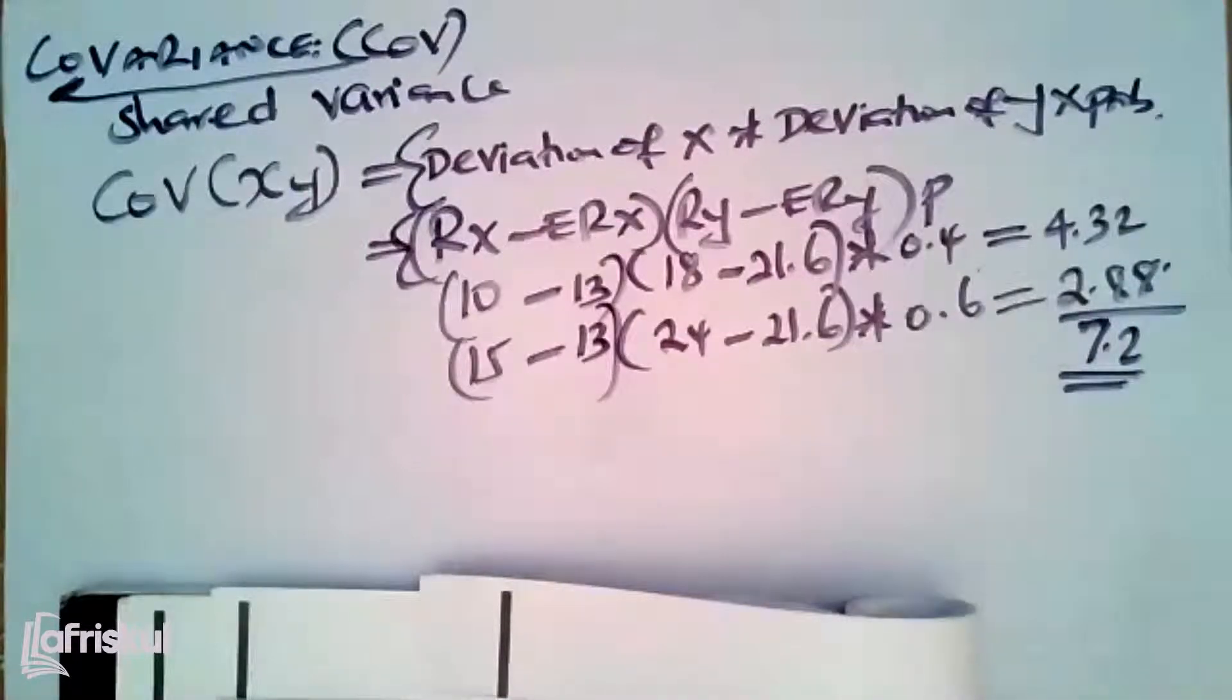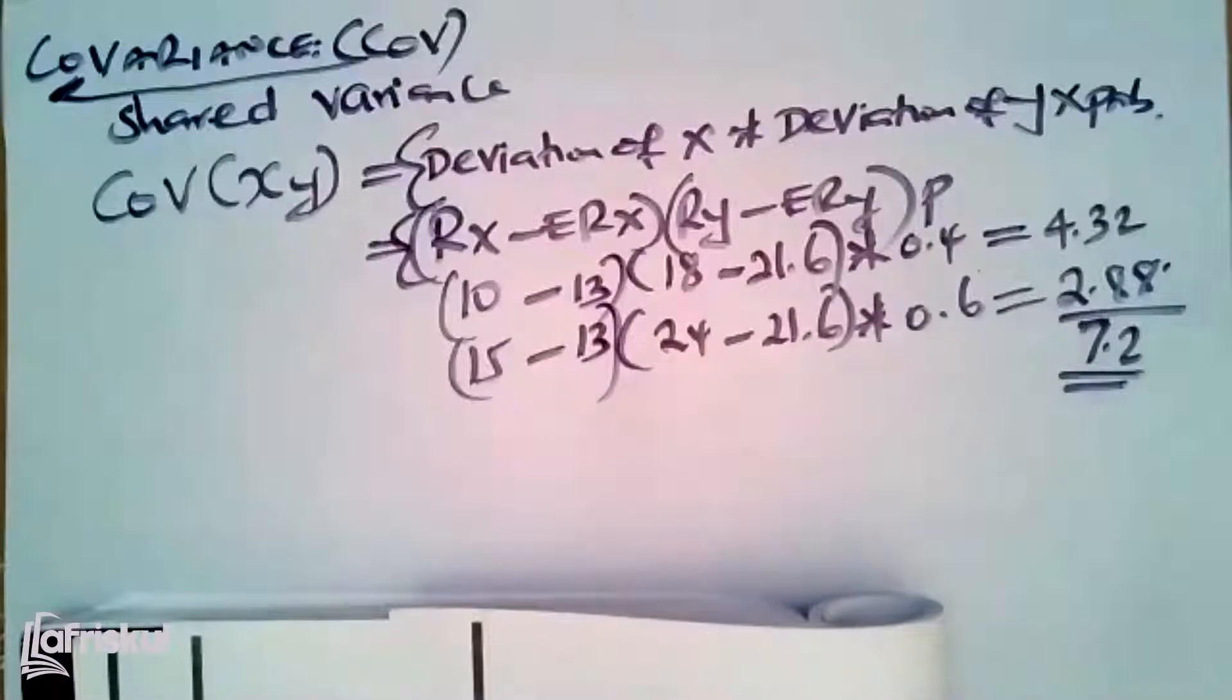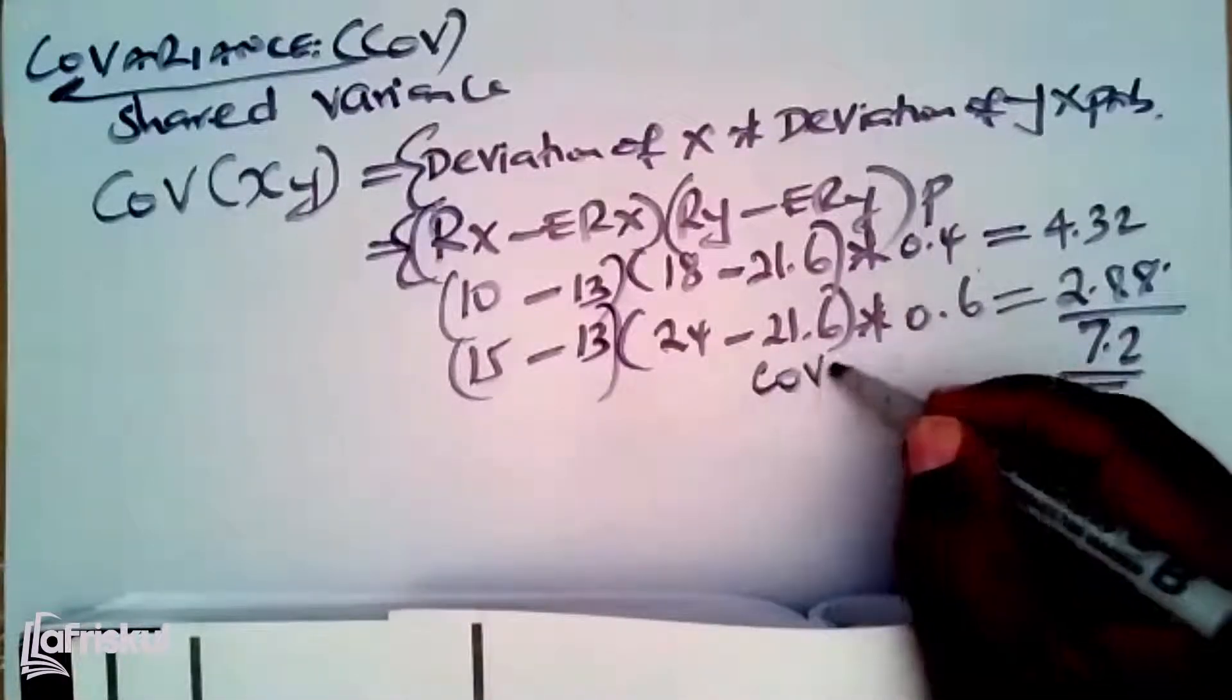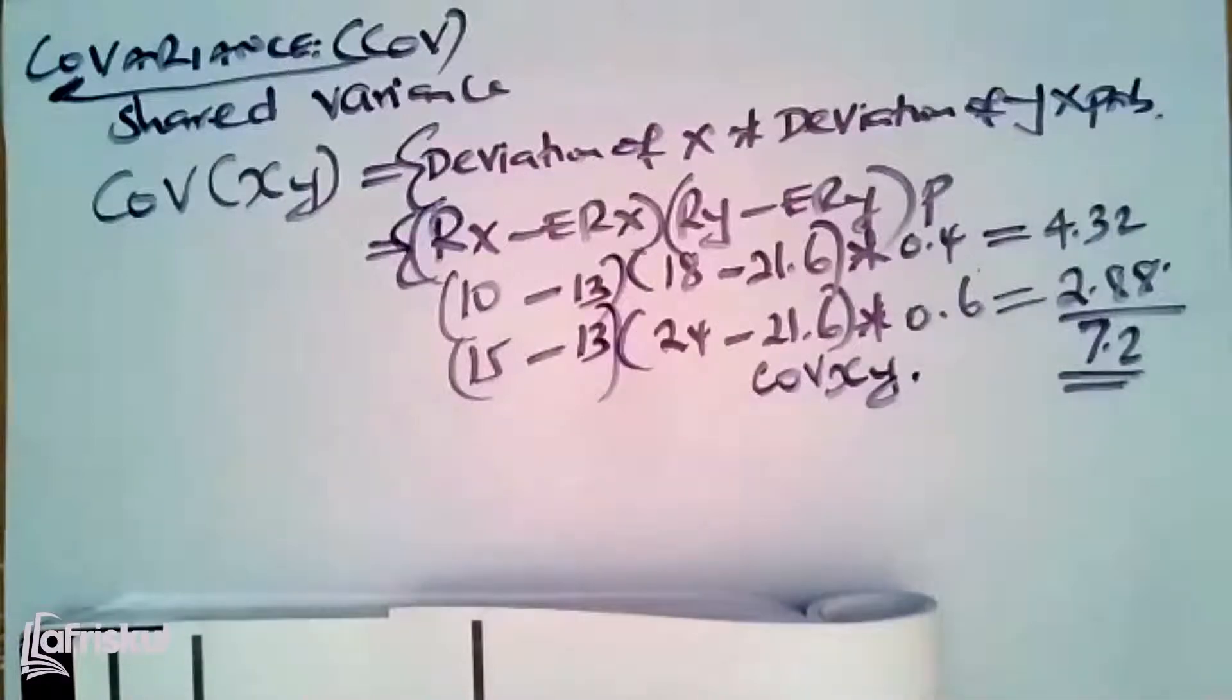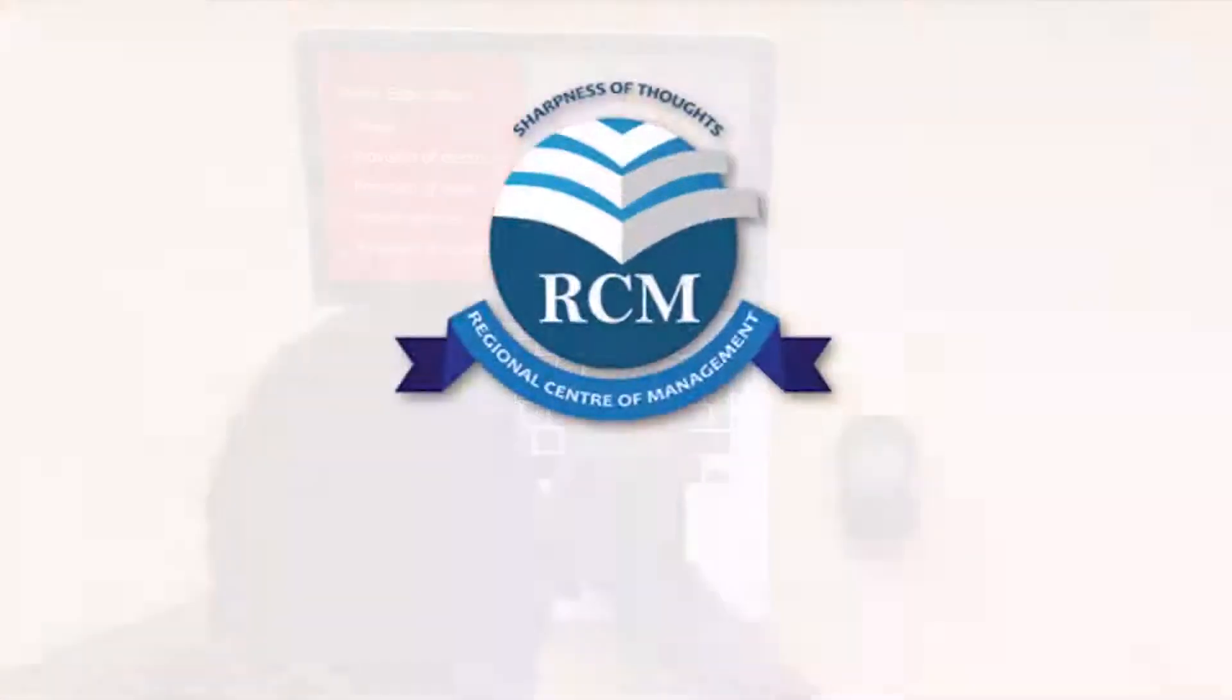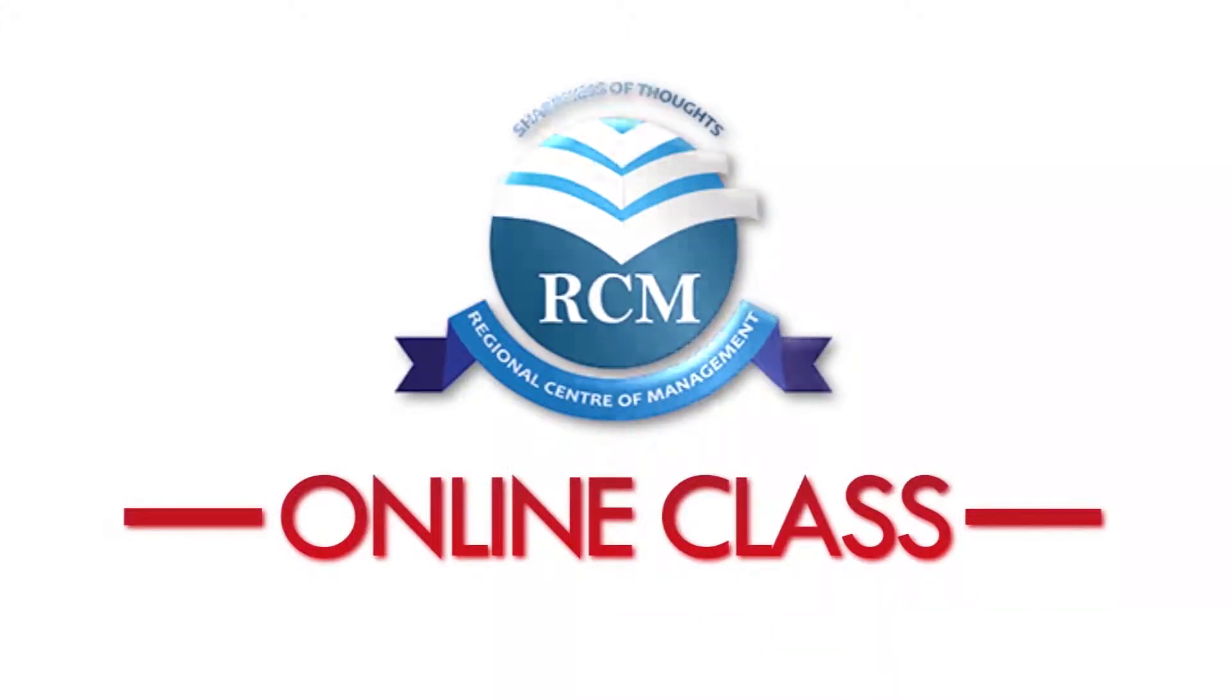And I'm not able to hear Vincent. Cynthia, are you able to get 7.2? Yes, so this 7.2 stands for what here - the 7.2 is now our CoV, is our covariance between the two securities.